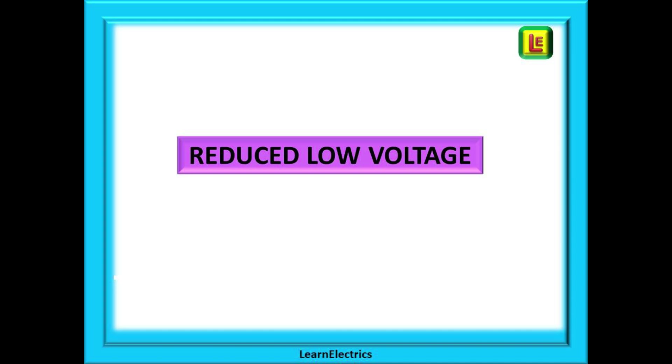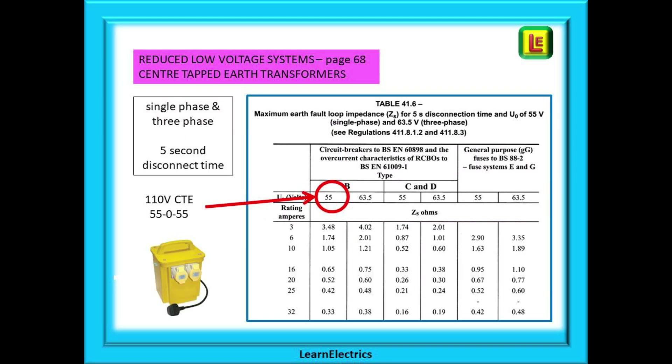There is a Table 2 for reduced low voltage systems. This is found on page 68. But what is a reduced low voltage system? A typical example is a big yellow 110 volt transformer that is found on many building sites. The secondary or output windings are centre tapped to earth, abbreviated to CTE. This means that the secondary voltage is 55-0-55 volts. The maximum voltage to earth therefore is 55 volts. It's not quite extra low voltage but it is a reduced low voltage, and that's an important difference to remember.